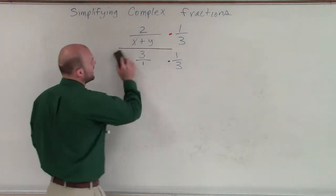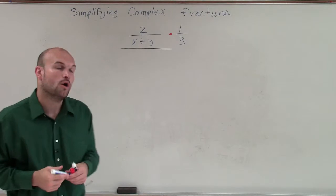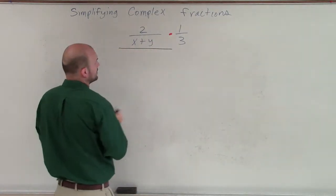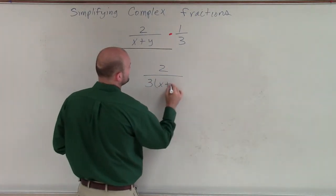Now I have a problem of 2 divided by x plus y times 1 third. When we multiply fractions, we multiply directly across. Therefore, I have 2 over 3 times x plus y.